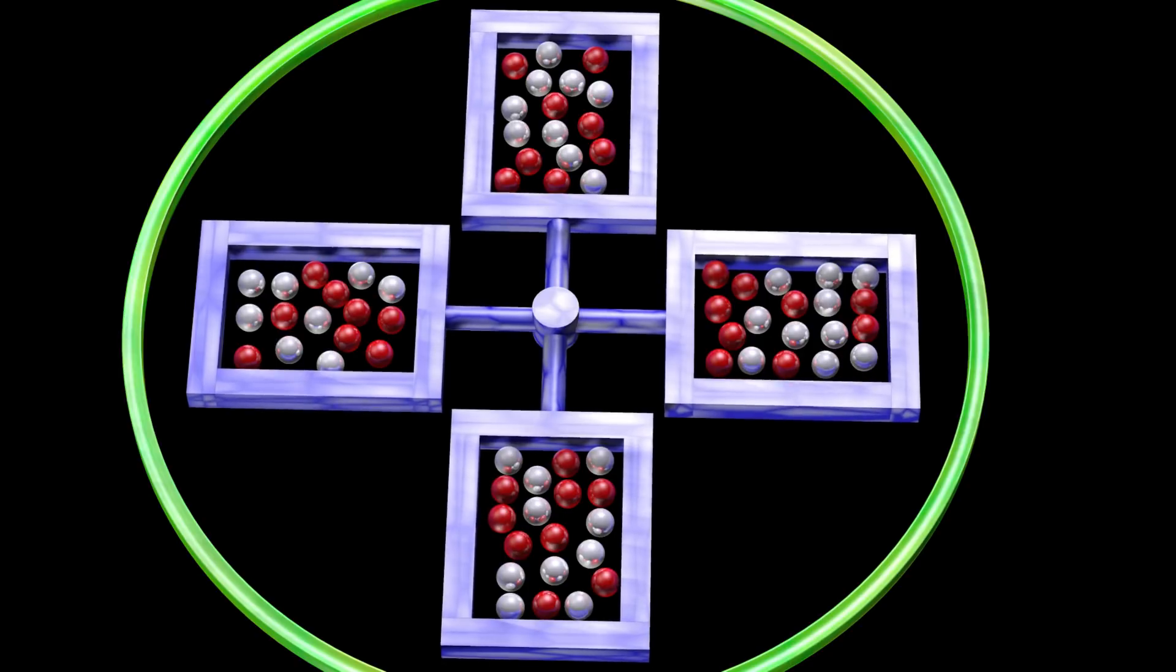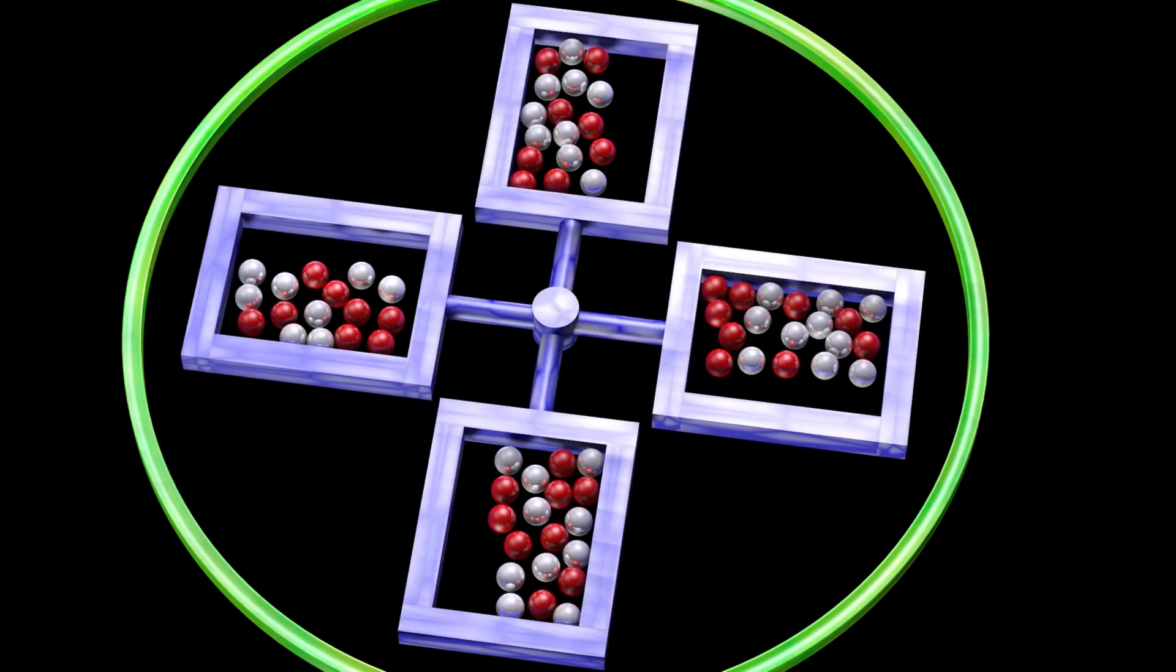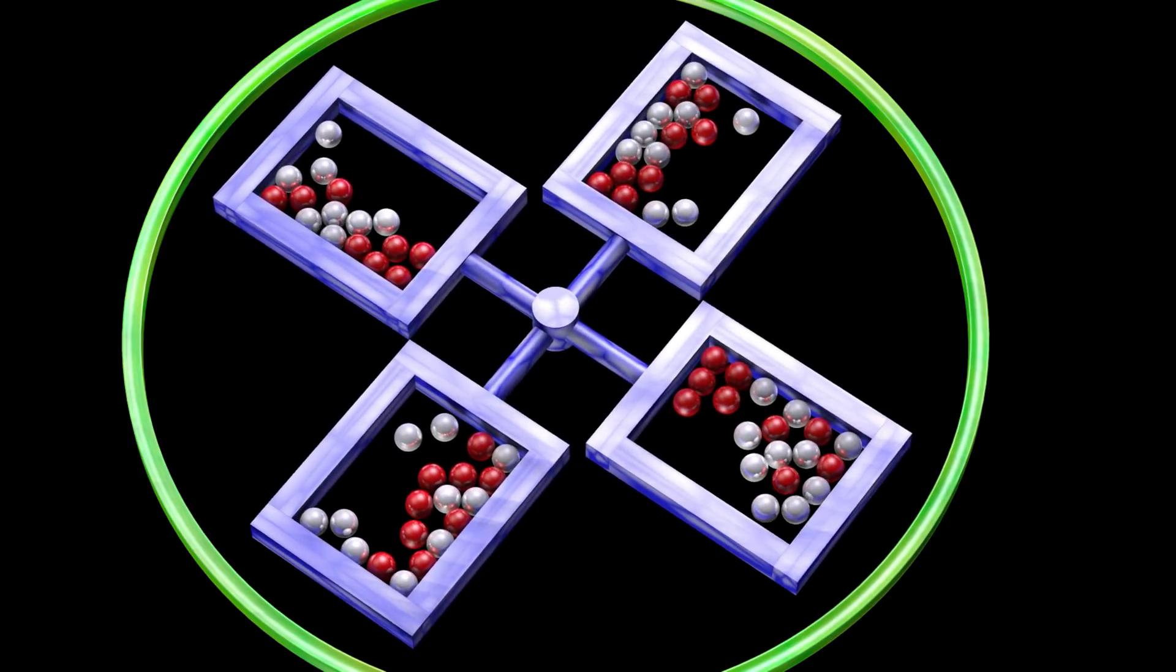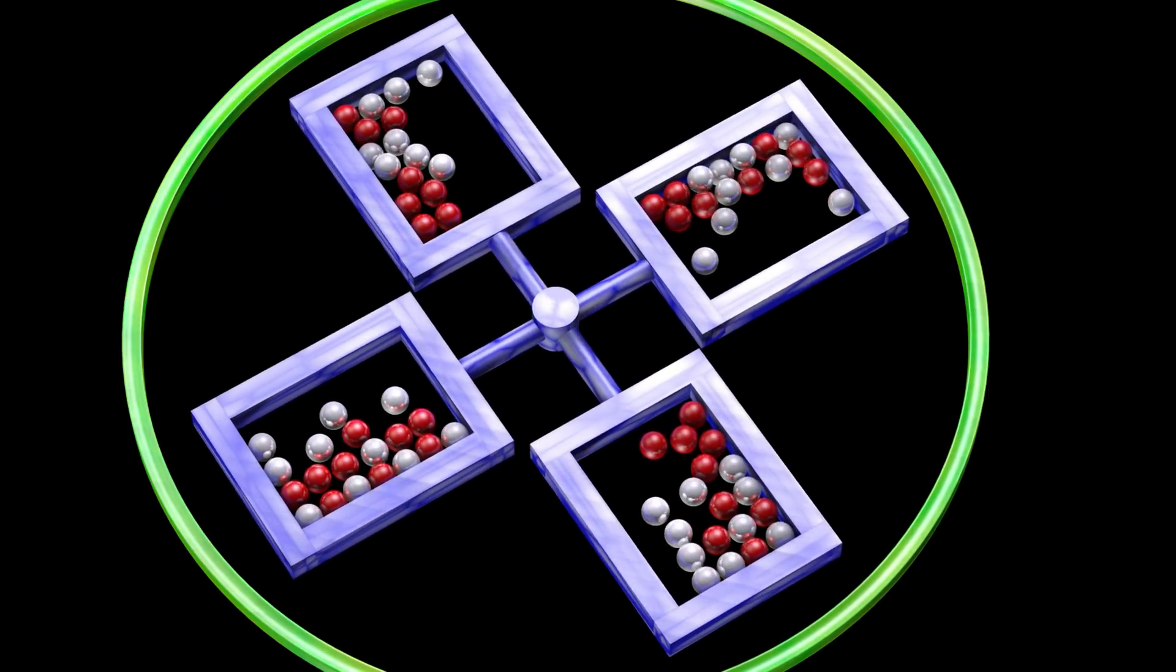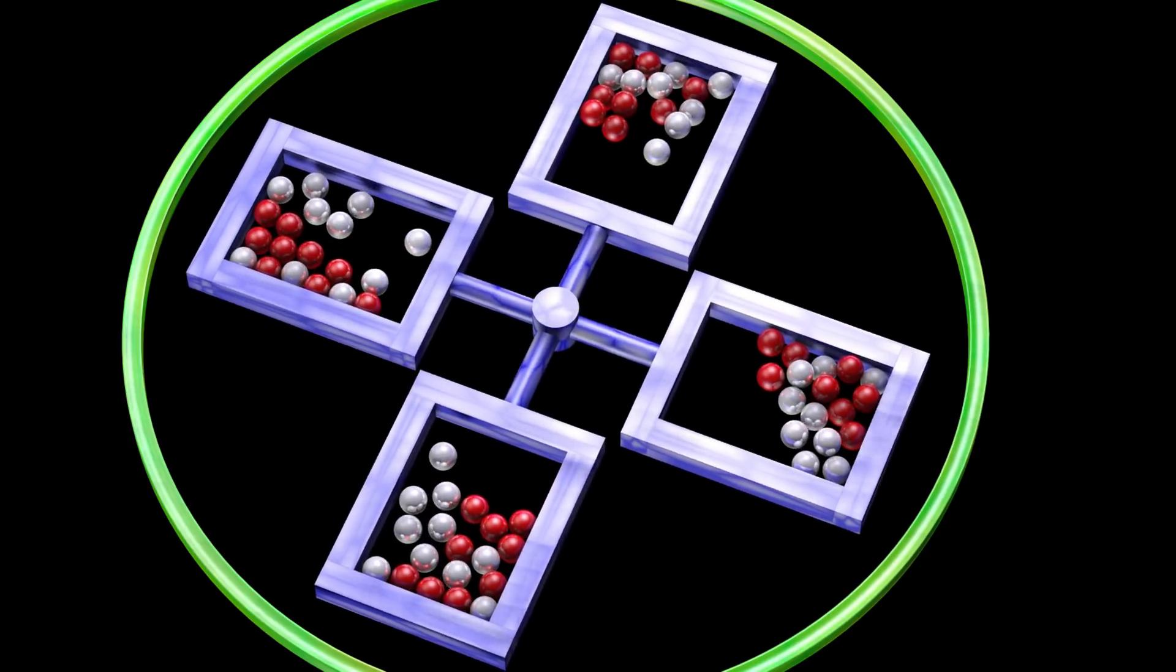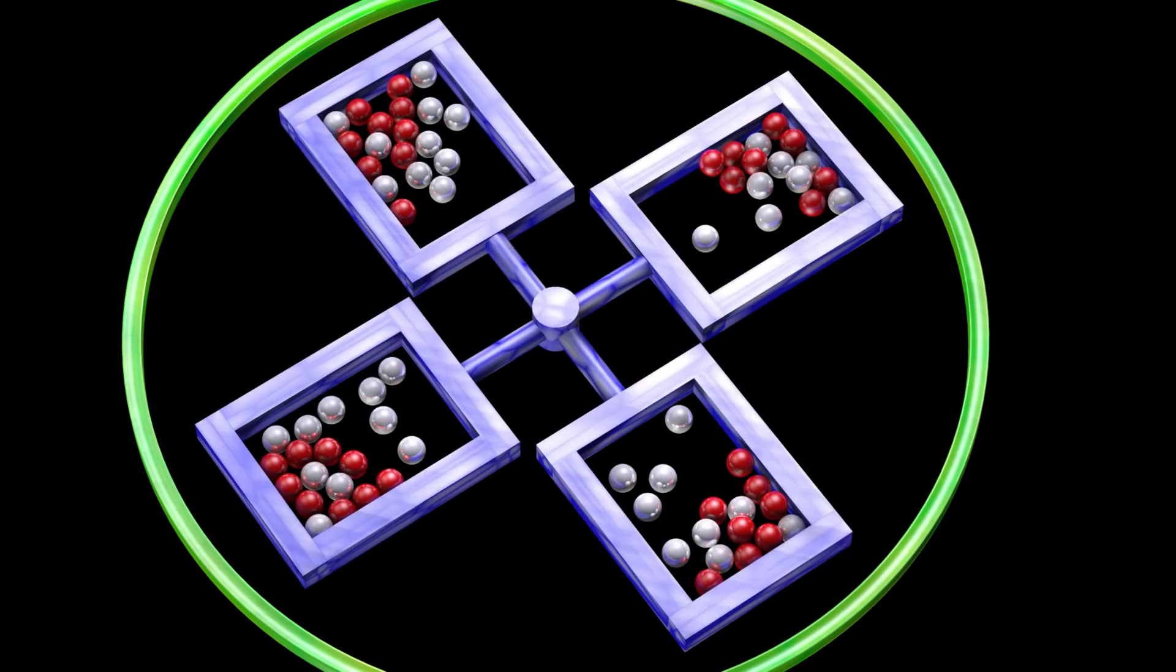We can do this by using a device we call a centrifuge. As the centrifuge rotates, the red spheres start to separate from the white spheres. The faster the rotation, the greater this effect.